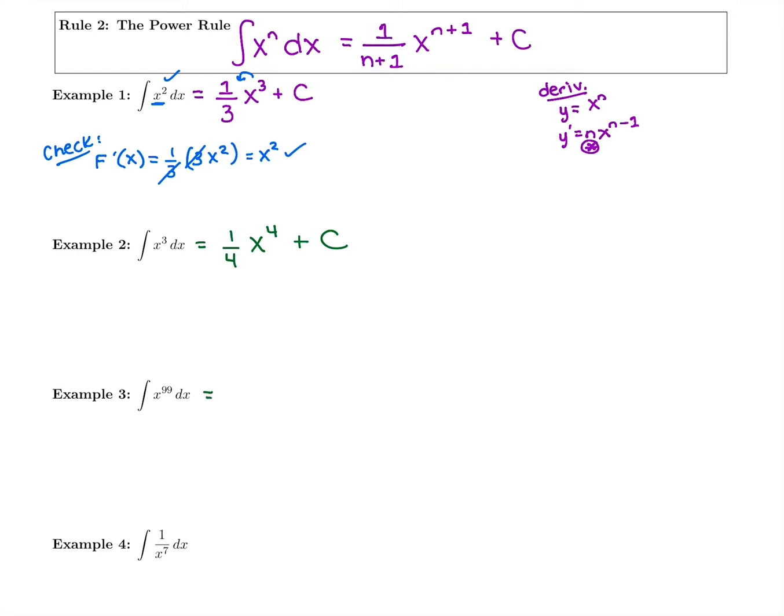Think about what is the antiderivative of x to the 99. We add 1. 99 plus 1 is 100. So 1 over 100, x to the 100 plus c.